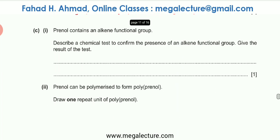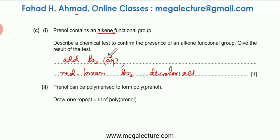Part C asks for a chemical test to confirm the presence of an alkene functional group. The test is bromination: add bromine water. The red/orange bromine decolorizes because it reacts with the alkene — bromine is added across the double bond.